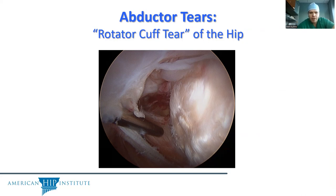Based on evolutionary biology, for abductor tendon tears you can think of them as the rotator cuff of the hip, where they are periarticular muscles that attach around a joint to help stabilize that joint.